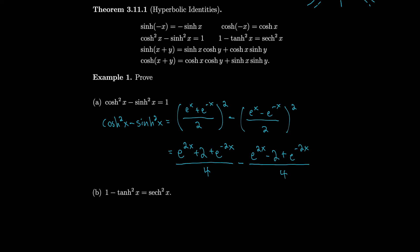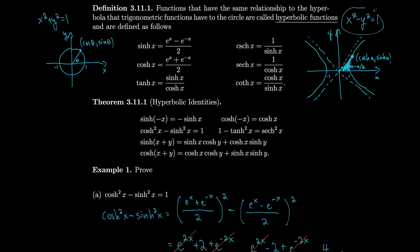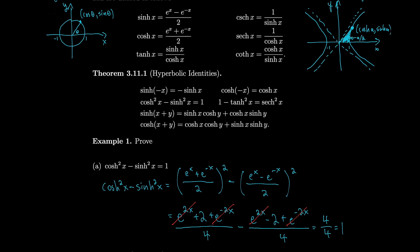Notice we have e^(2x) − e^(2x), which cancels, and e^(−2x) − e^(−2x), which cancels. However, we have −2 minus −2, giving positive 4, so that's 4/4 = 1. That's exactly what we wanted. Everything lines up with the way we defined it with x² − y² = 1.